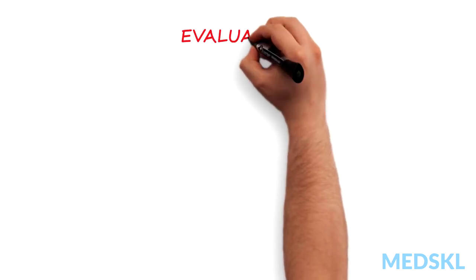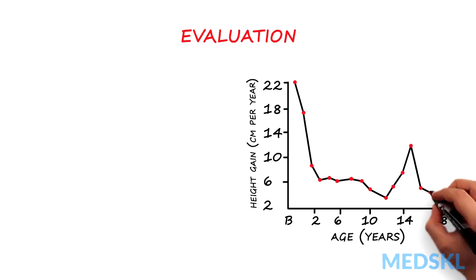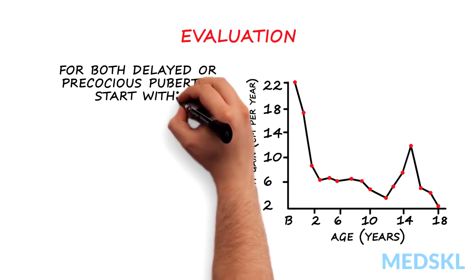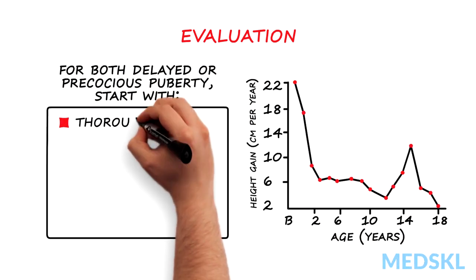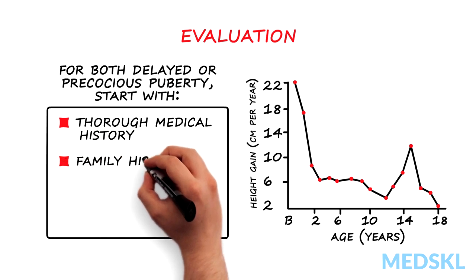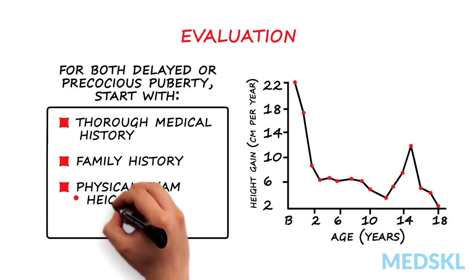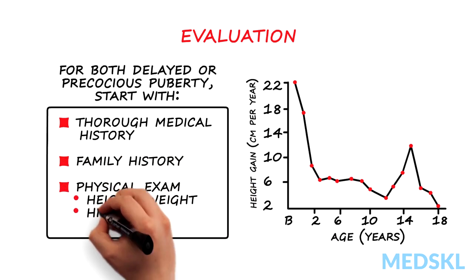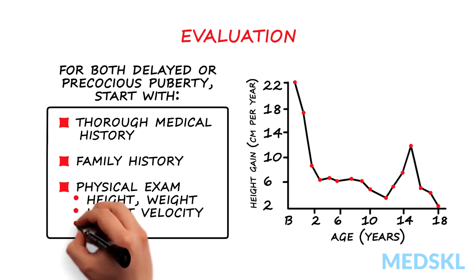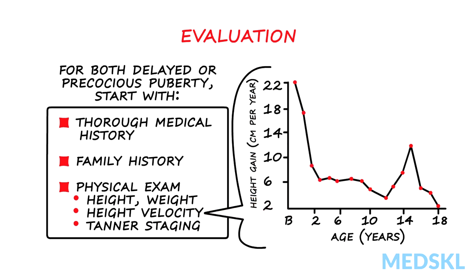Evaluation of delayed or precocious puberty should always start with a thorough medical history, family history, and physical exam, including height, weight, height velocity, and Tanner staging of pubertal development.